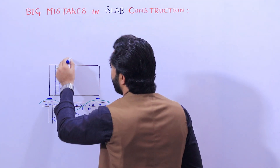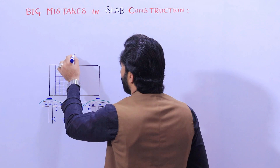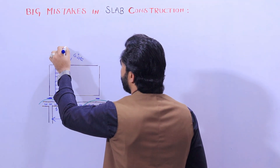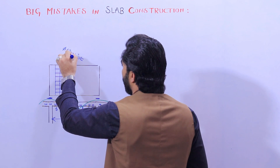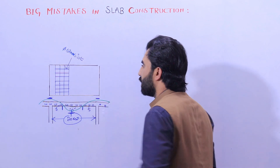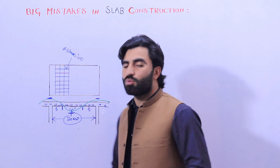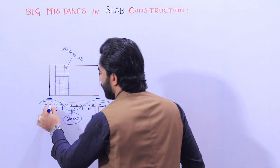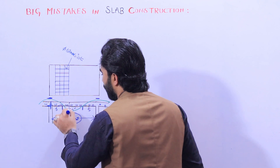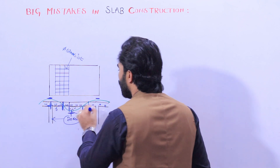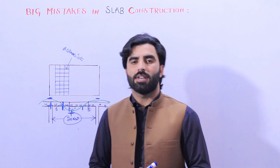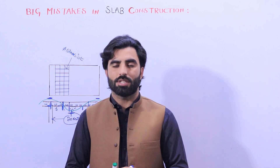To resist negative bending moment, we provide extra steel rods. As you can see in this section, the spacing is 6 inches center to center and the diameter is 12 millimeters, as I am showing you in this practical video. This is one of the big mistakes — don't provide lapping here. After L/4 you are allowed to provide lapping.